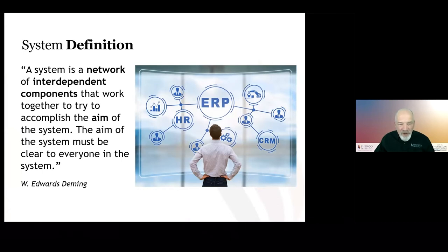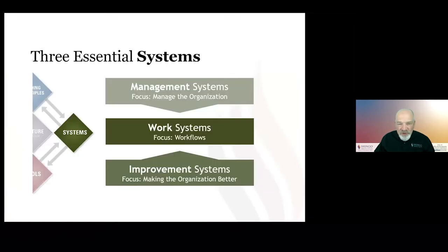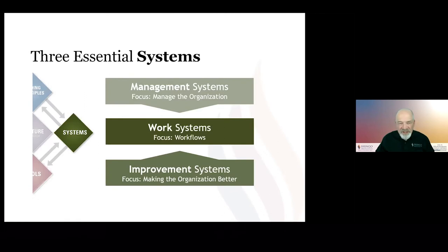Through our research, we found three different types of essential systems within organizations. First, work systems — the systems that get the work done, the work that adds value, what you sell to your clients or customers. Second, improvement systems — they help make the work better or easier, such as training systems, onboarding systems, or idea suggestion systems. Third, management systems — things that allow the organization to run, such as strategy development, strategy deployment, and budgeting systems.